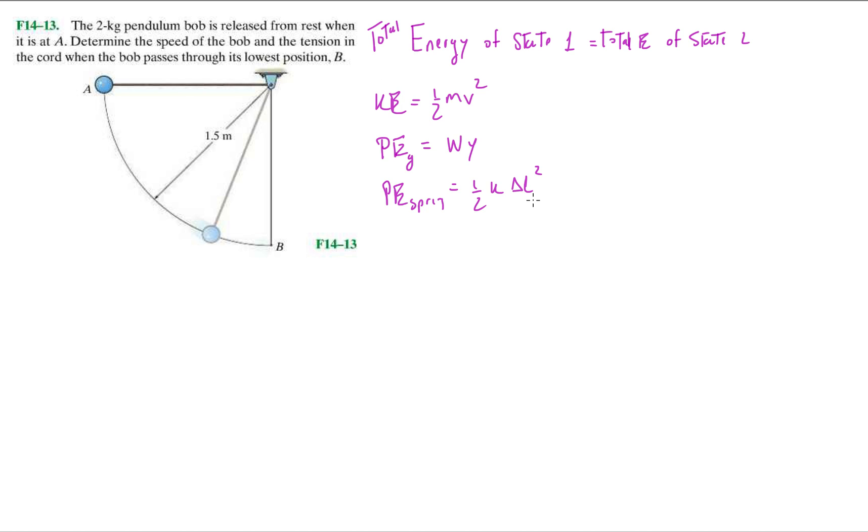For this problem we're going to be focusing on these three things. What this allows us to do is say okay, let's write down the energies of state one or position A, and you're going to have to be setting your datum or your zero potential.